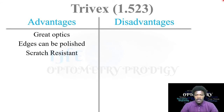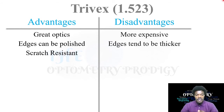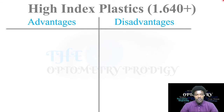Trivex has a refractive index of 1.523. The advantages are: great optics, the edges can be polished, and it is scratch resistant. The disadvantages are that it is one of the more expensive materials and the edges tend to be thicker compared to other options.